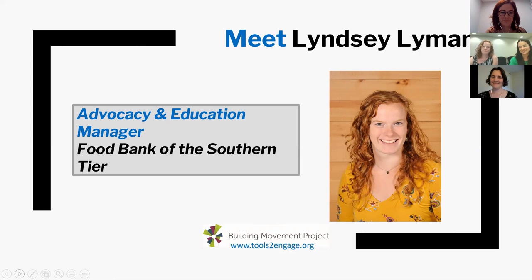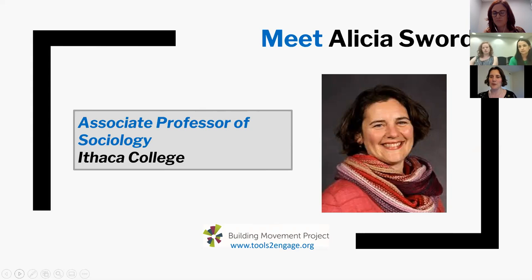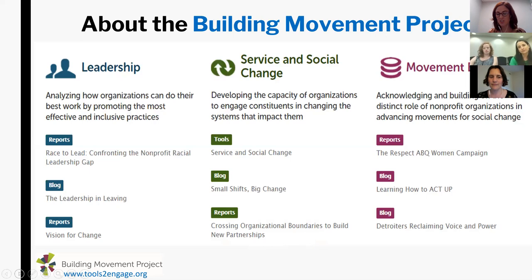My name is Alicia Swords. For two decades I've been part of a network of organizations committed to building a movement to end poverty led by the poor across color lines. I've been a poverty scholar with the Poverty Initiative at Union Theological Seminary, I'm on the staff of the University of the Poor and on its editorial board. I'm an associate professor of sociology at Ithaca College and direct the honors program there. Since about 2010 I've worked with the Food Bank of the Southern Tier to connect with organizations representing the 140 million poor people across the United States.